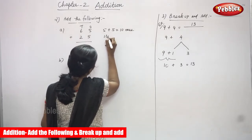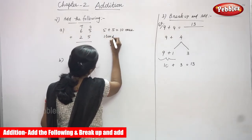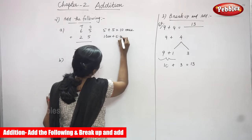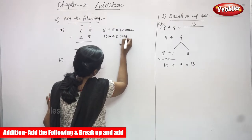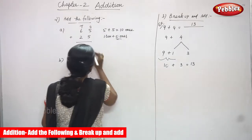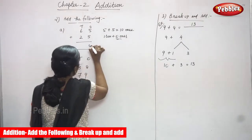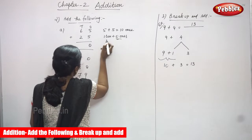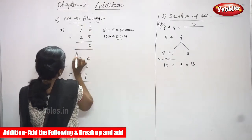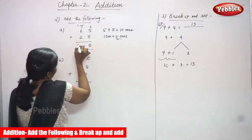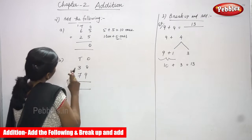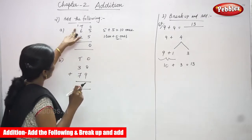So that is one ten plus zero ones. I'm taking only the zero here, so I put zero in the ones place. The remaining one ten goes to the top of the tens column as a carry over.